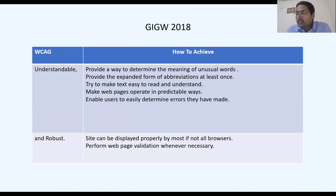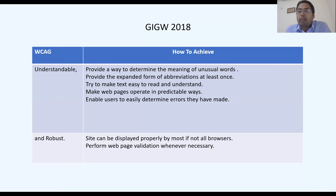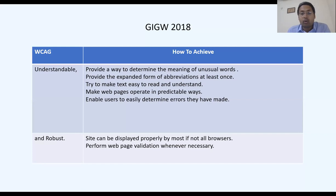The third principle is Understandable — the user must be able to understand the information and operation of the interface. This can be achieved by providing a way to determine the meaning of unusual words, making web pages easy to read, ensuring pages operate in predictable ways, and enabling users to easily identify errors.